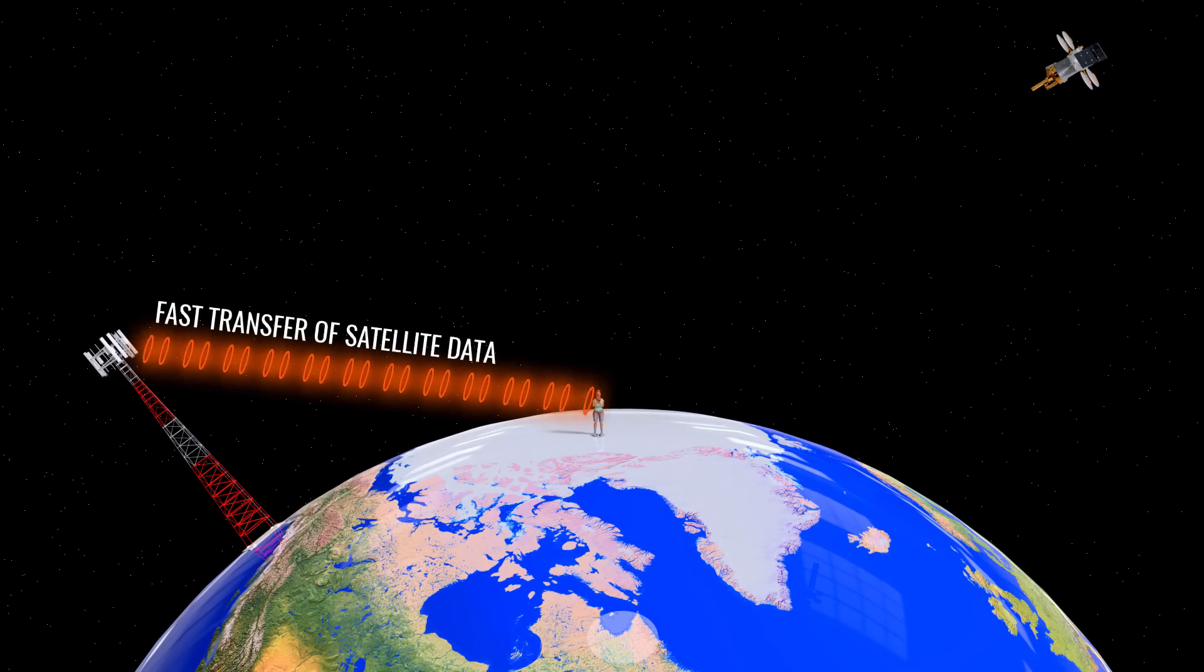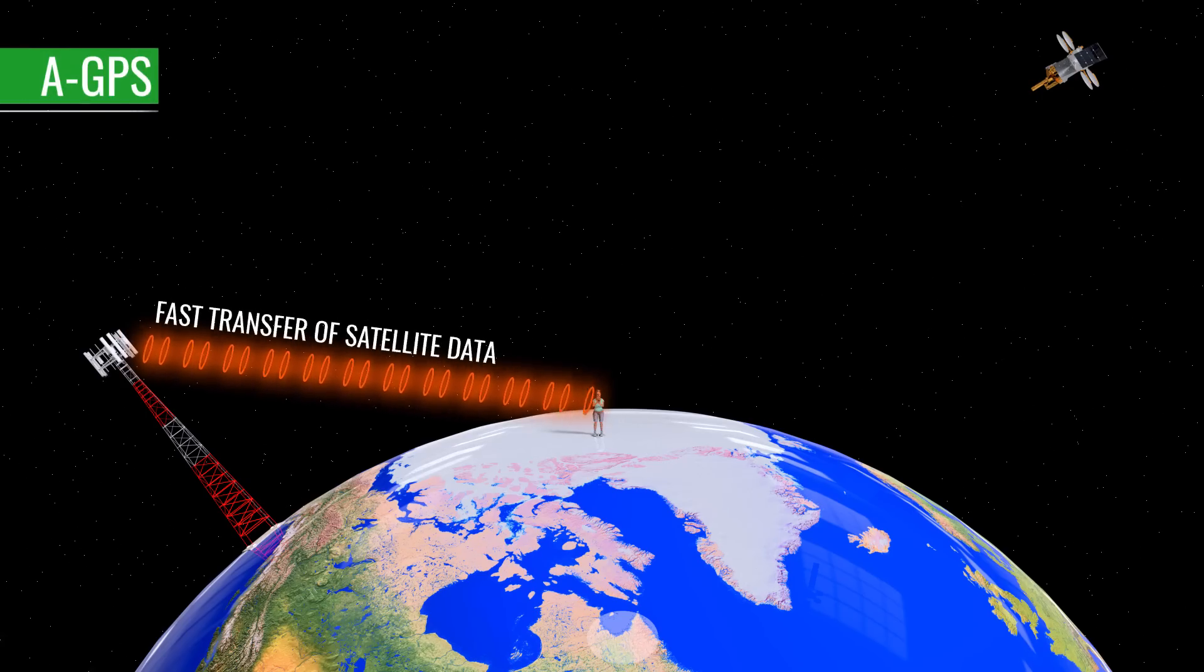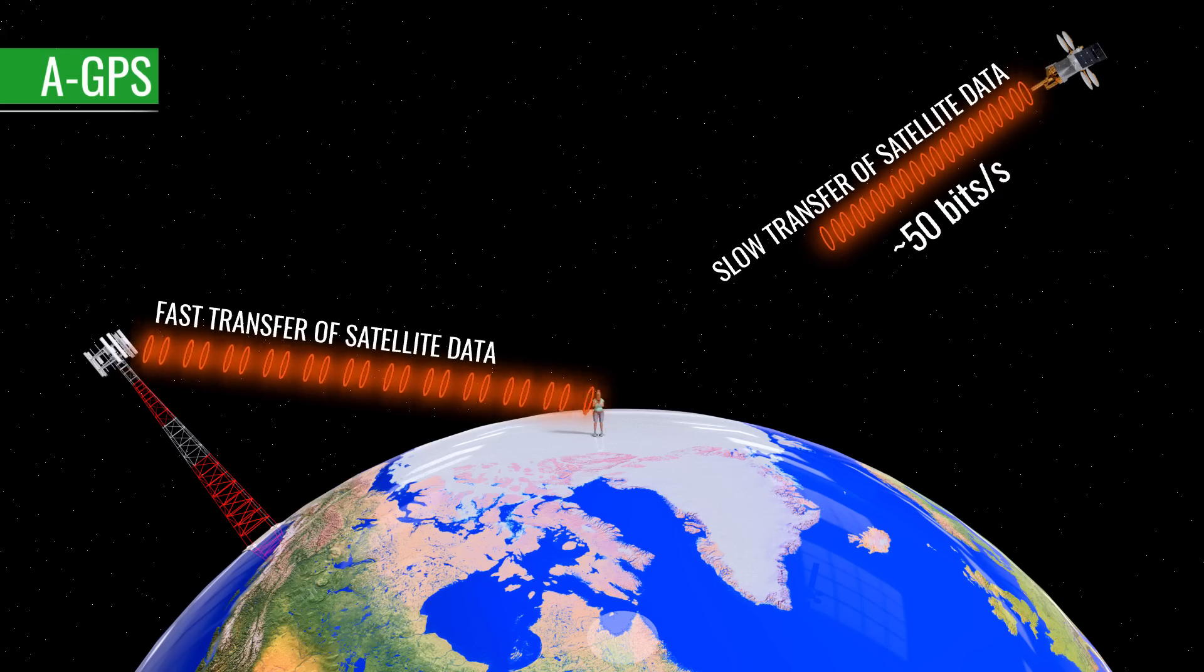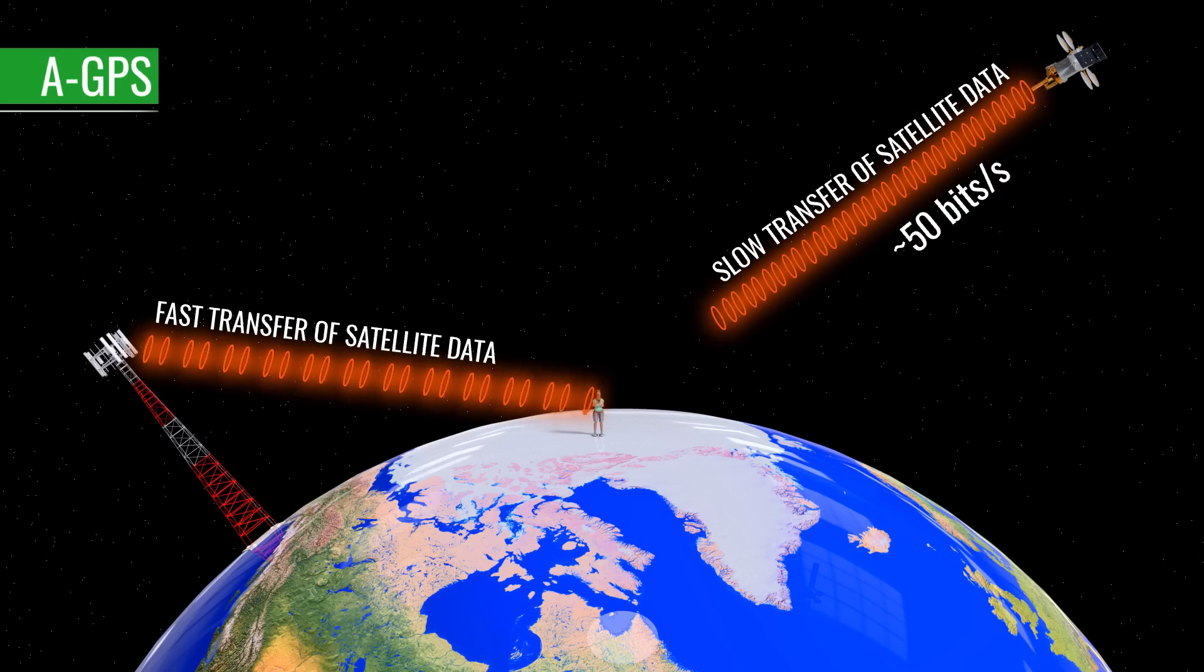Satellite location information can be downloaded via the Internet rather than direct satellite downloads, which are very slow. Such GPS systems are known as assisted GPS.